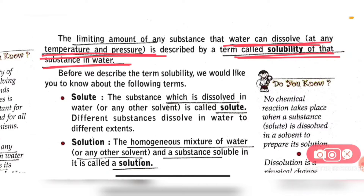Each substance has a particular solubility, and that particular solubility depends on a particular pressure and temperature. If we increase or decrease the temperature and pressure, the solubility of a particular substance will be changed.